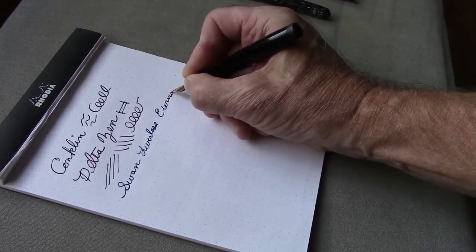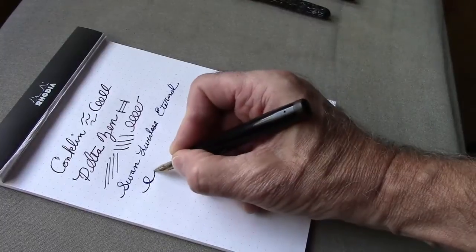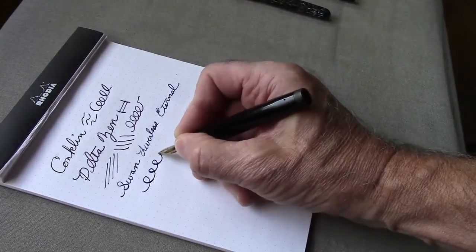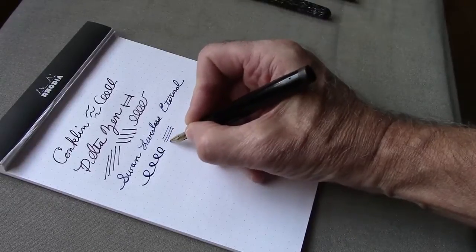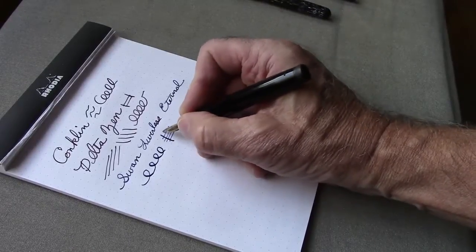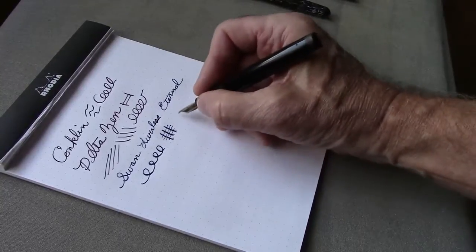You might hear the nib on the paper. It has a decent amount of variation to it. The horizontal lines are fairly thin, and the vertical lines are three to four times the thickness. It lays down a decent amount of ink.